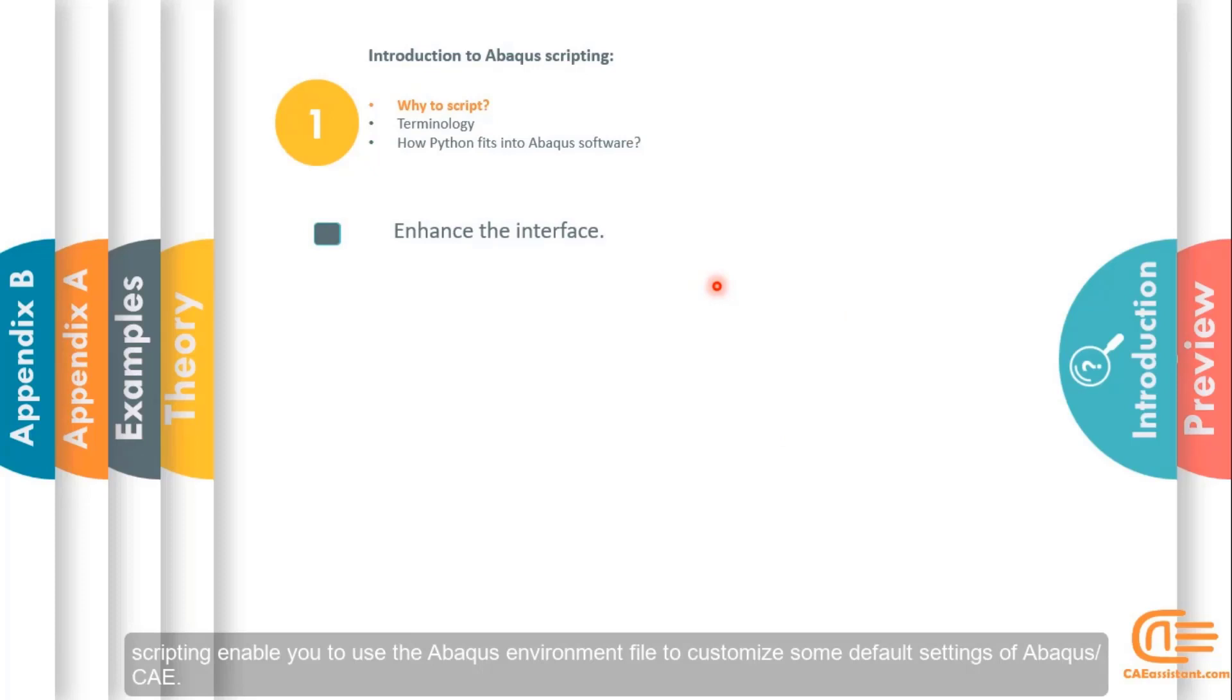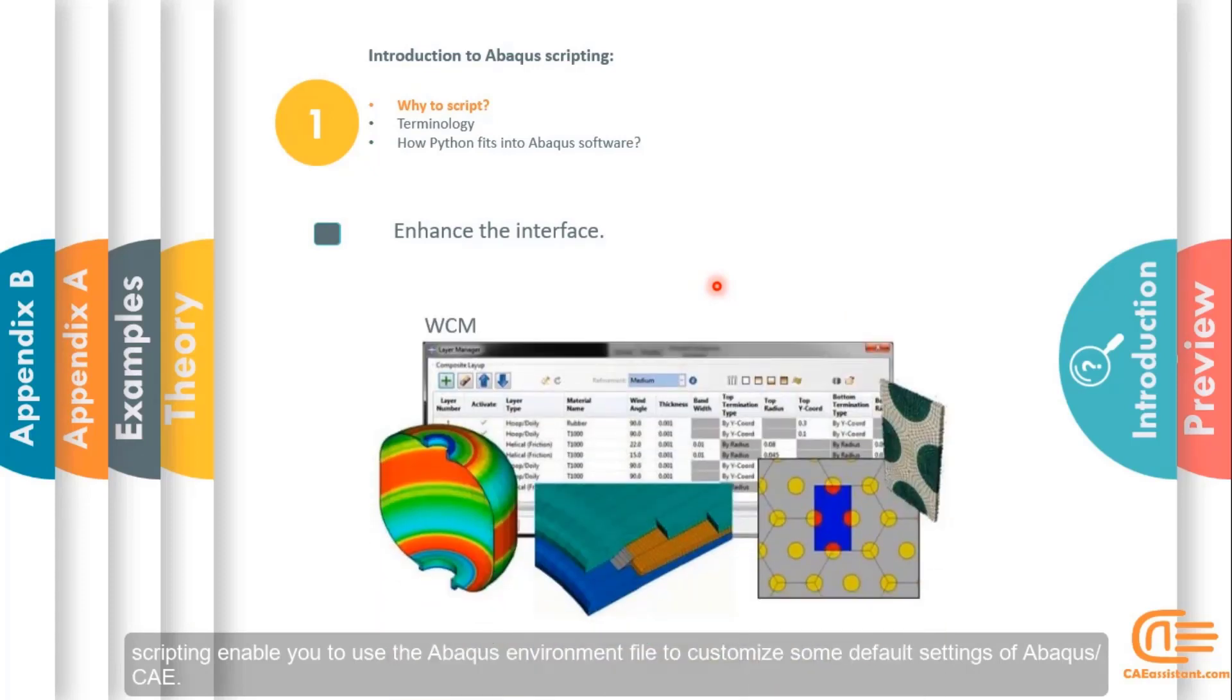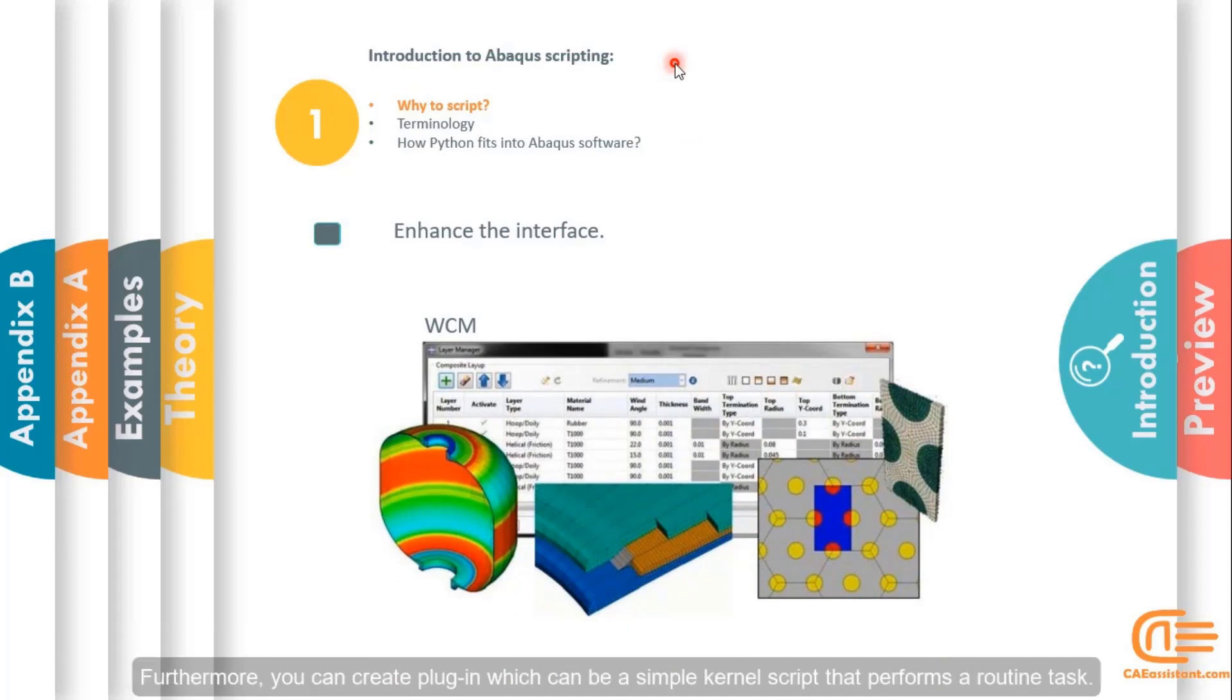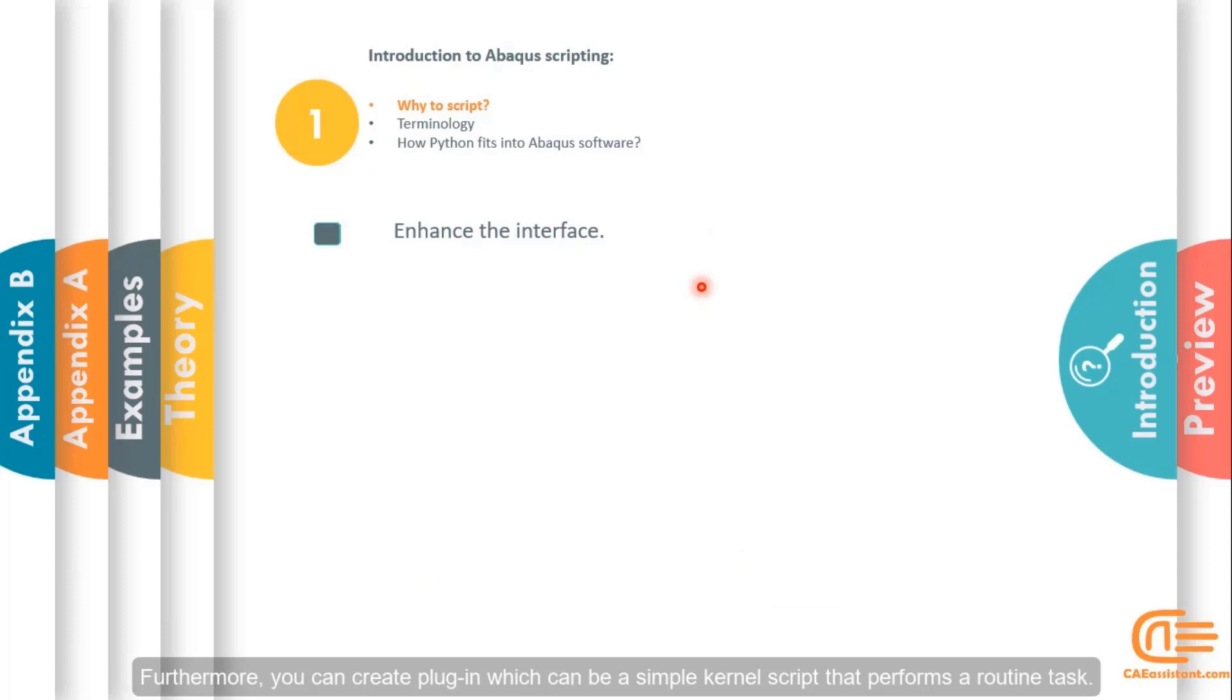Scripting enables you to use the Abacus environment file to customize some default settings of Abacus CAE. Furthermore, you can create plugins which can be simple kernel scripts that perform routine tasks. In this scenario, the advantage is that of convenience.